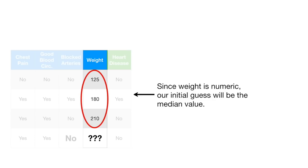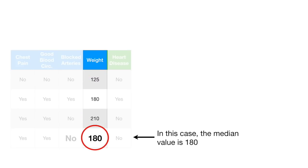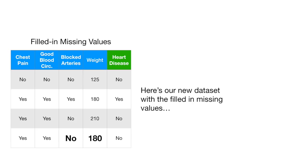Since weight is numeric, our initial guess will be the median value. In this case, the median value is 180. Here's our new data set with the filled in missing values.